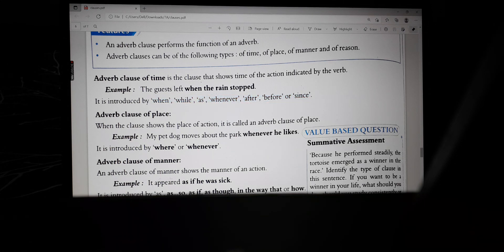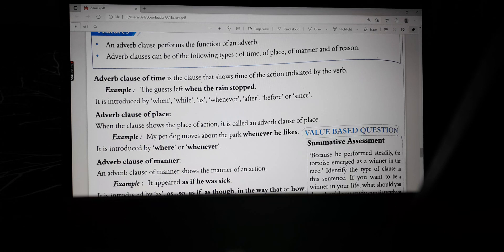Now, let us see adverb clause of place. When the clause shows the place of an action, it is called an adverb clause of place. Example: my pet dog moves about the park whenever he likes. So when you are using the word like where or whenever, that means it is introducing the adverb of place.